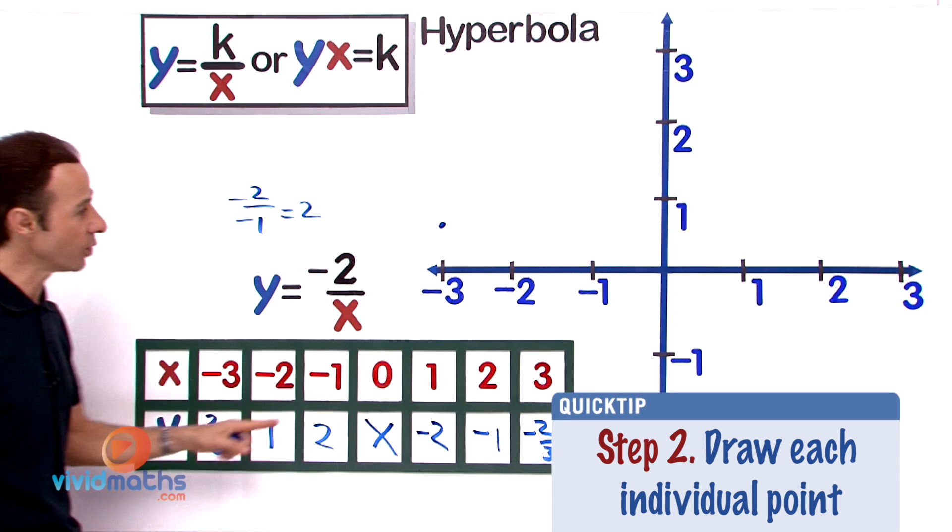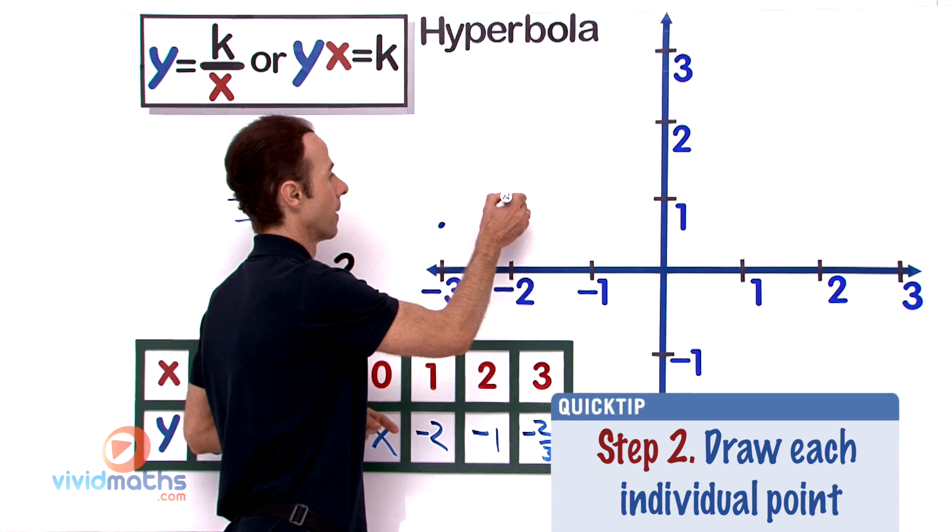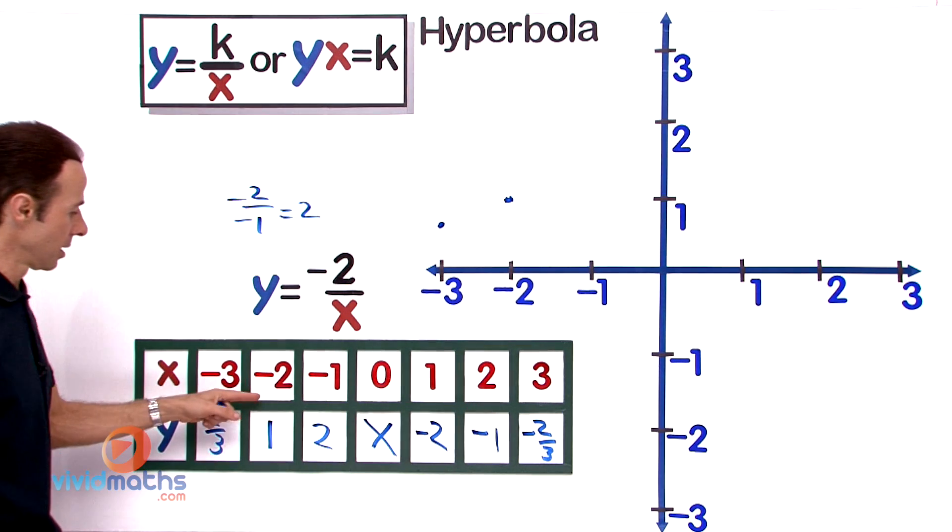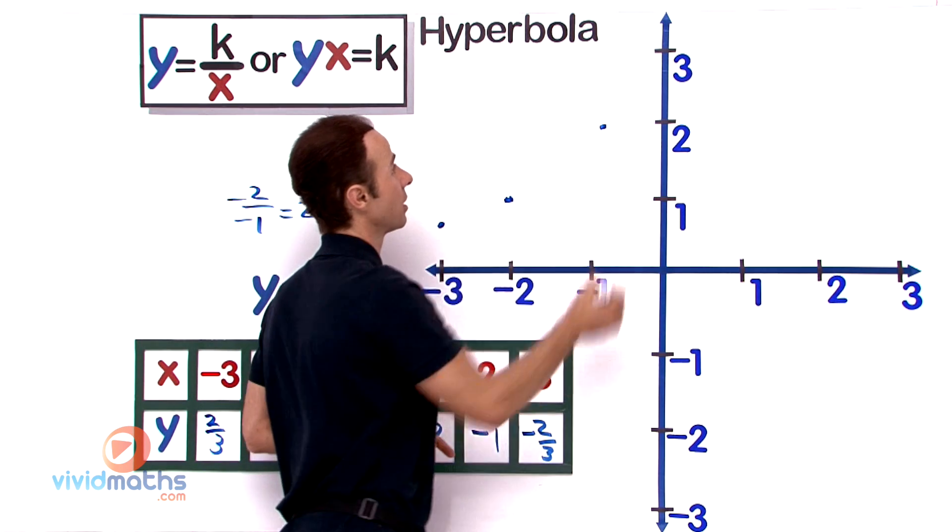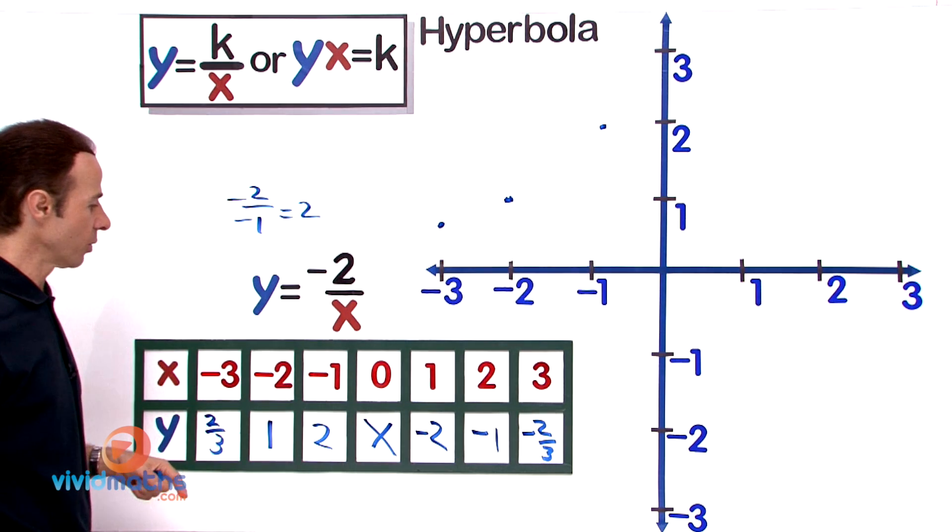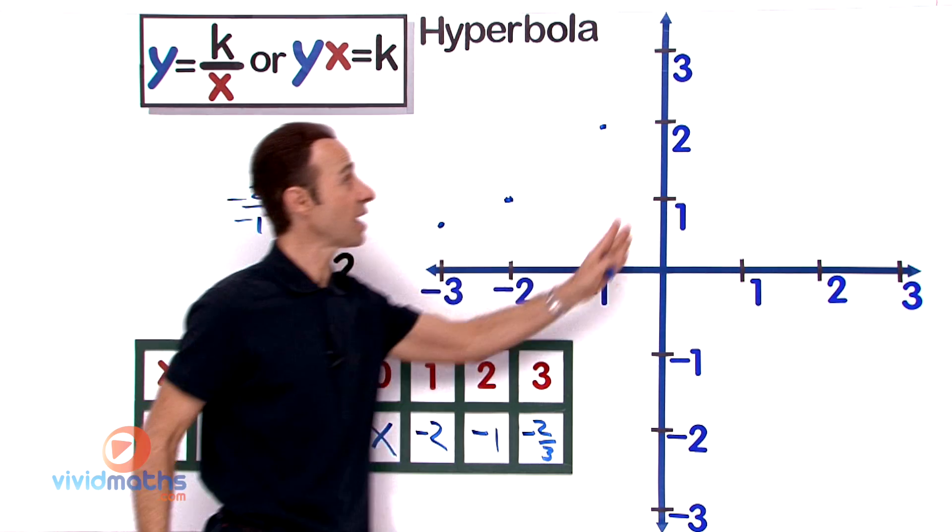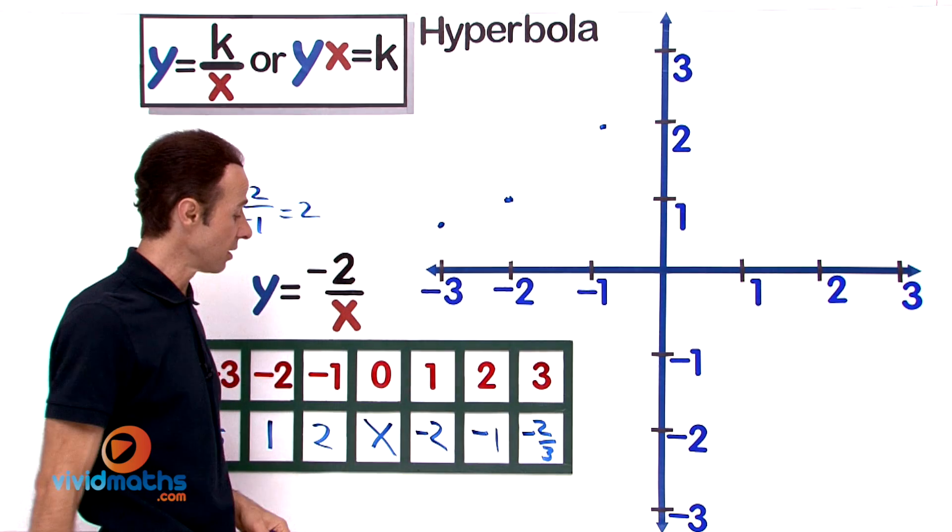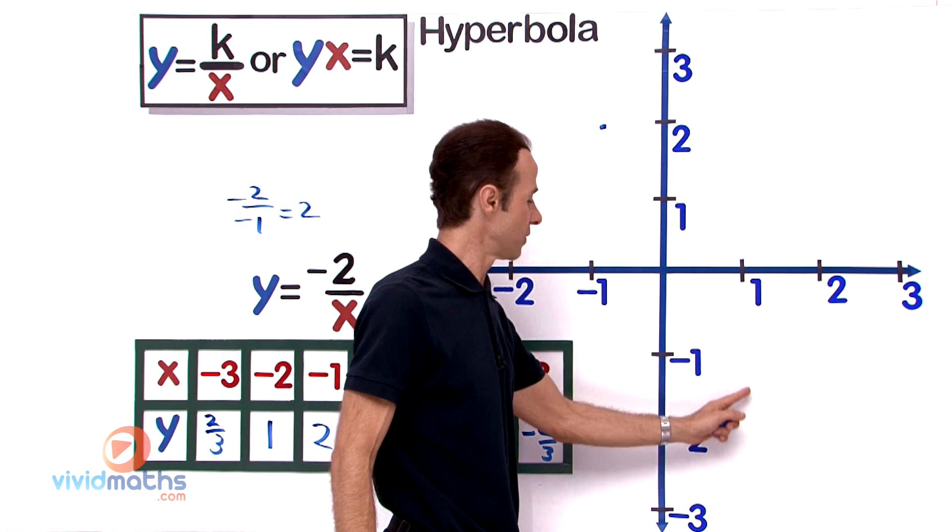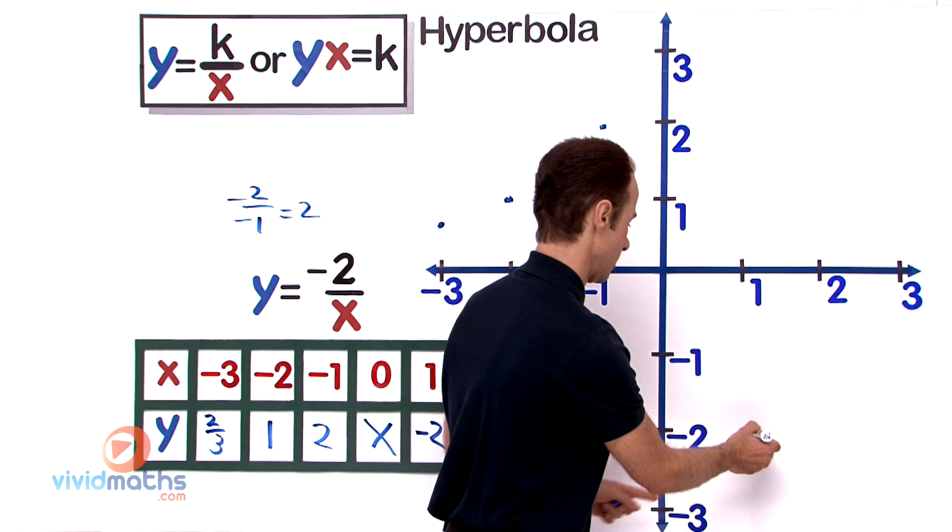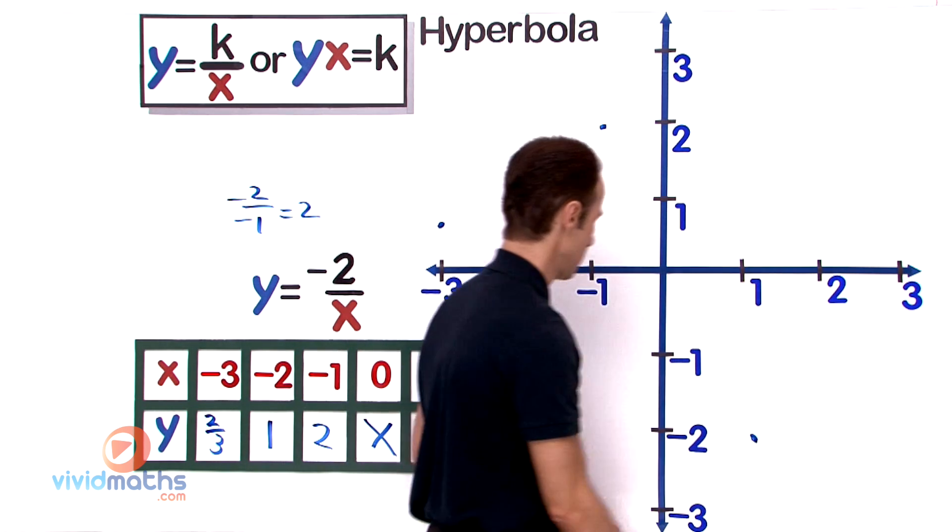And then we have the 0, which does not touch the axis, so we leave that. We have 1 and negative 2. 1 negative 2 is going to be there.